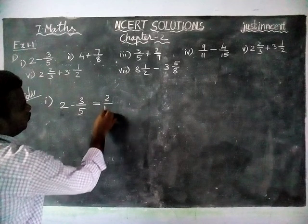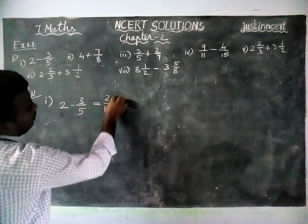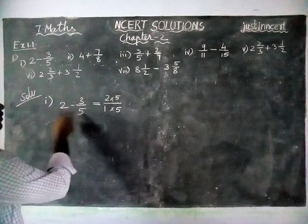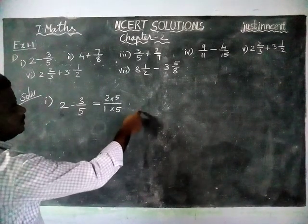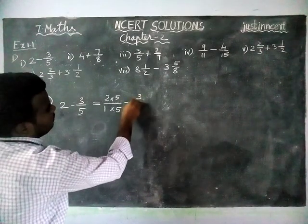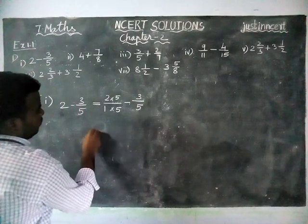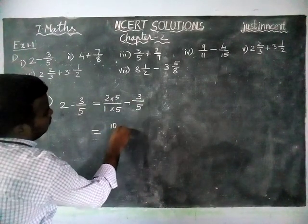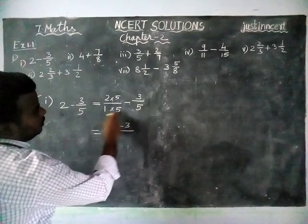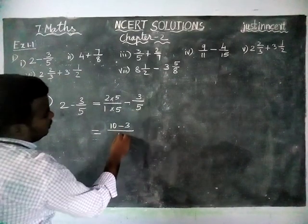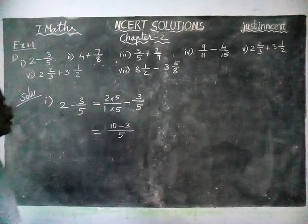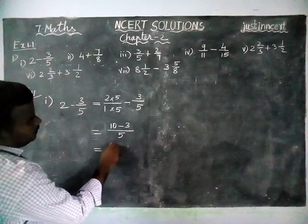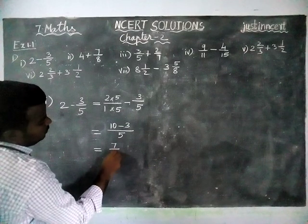2 by 1 into 5 by 5. When we are multiplying 5 by 5 we will get the denominator equal. Minus 3 by 5 is equal to 2 fives are 10 minus 3. Now both denominators are equal. So now we are taking as a common denominator.